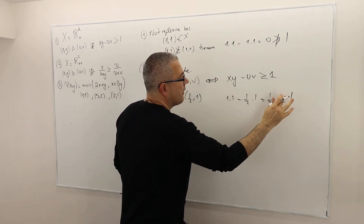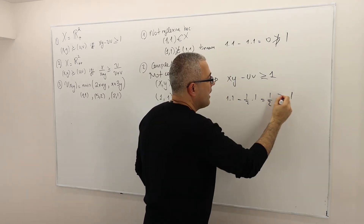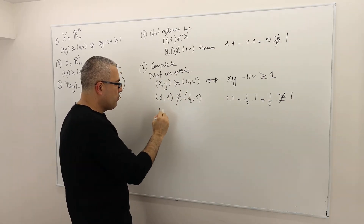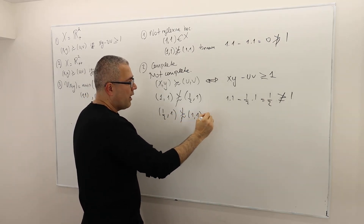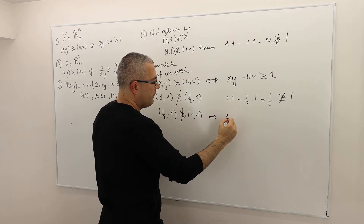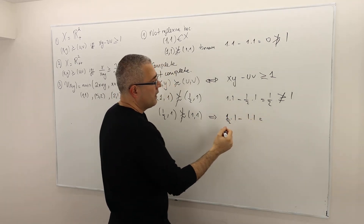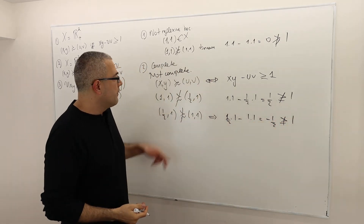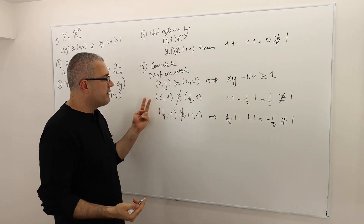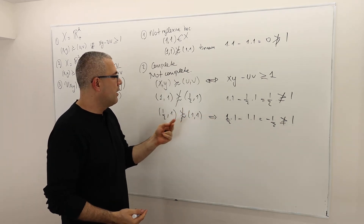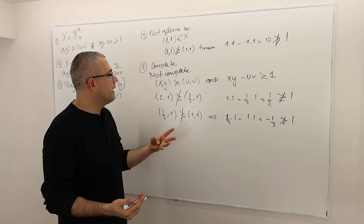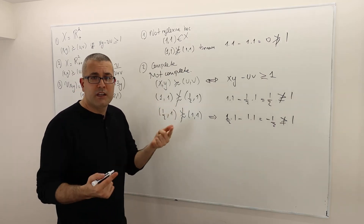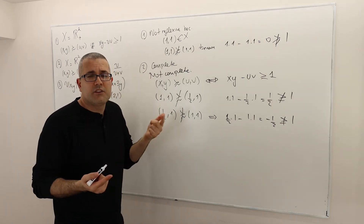This is not greater than or equal to 1. And also, (½, 1) is not at least as good as (1, 1), because ½ times 1 minus 1 times 1 equals minus ½, which is clearly not greater than or equal to 1. So both conditions fail to hold. Therefore it's neither the case that (1,1) is at least as good as (½,1), nor that (½,1) is at least as good as (1,1). So I found one example where this binary relation cannot compare, and hence it is not complete.